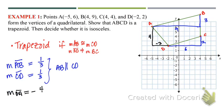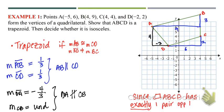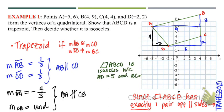To figure out if it's isosceles, we need to find the length of AD and BC. We know they're not parallel, so that confirms it's a trapezoid. Since quadrilateral ABCD has exactly one pair of parallel sides, it's a trapezoid. It is isosceles because AD equals 5 and BC also equals 5, as found using the Pythagorean theorem.